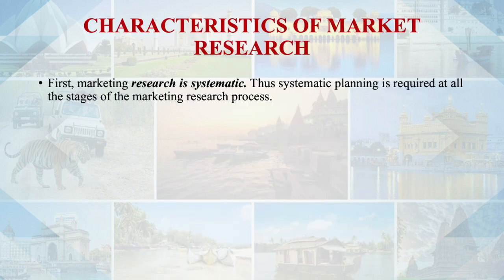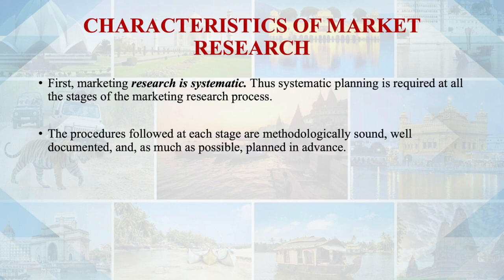Characteristics of marketing research: Dear learners, first, marketing research is systematic. Systematic planning is required at all stages of the marketing research process. The procedures followed at each stage are methodologically sound, well documented, and planned in advance. Marketing research uses scientific methods in which data are collected and analyzed to test prior notions or hypotheses. Experts have shown that studies featuring multiple and often competing hypotheses yield more meaningful results than those featuring only one dominant hypothesis.